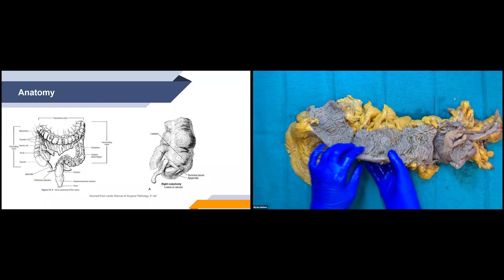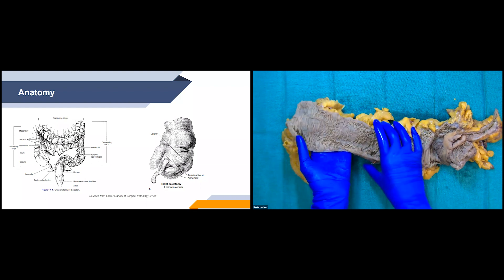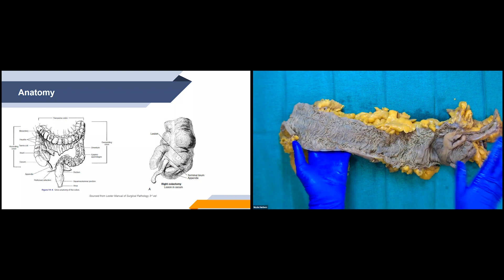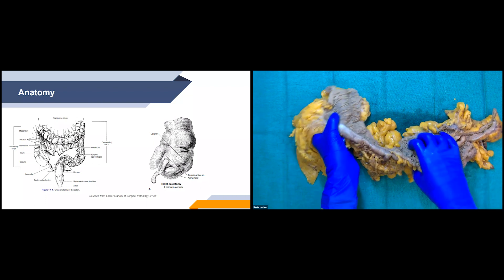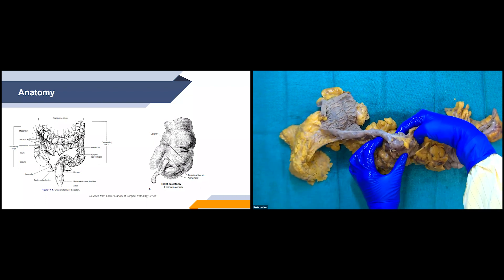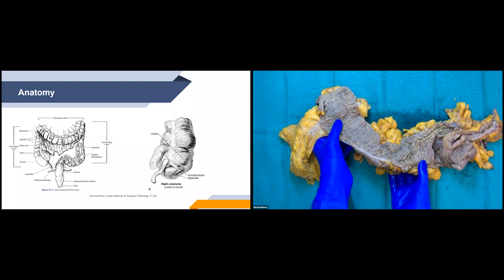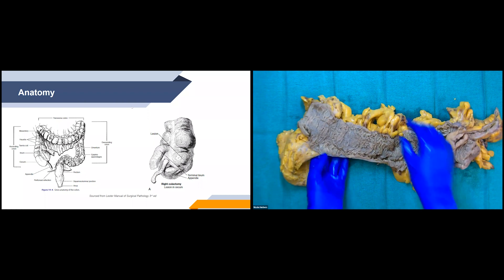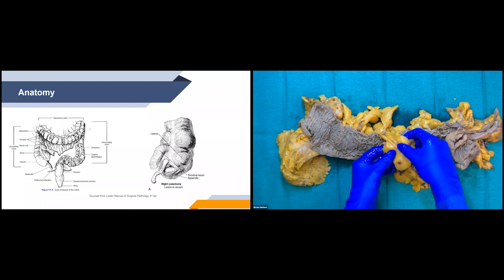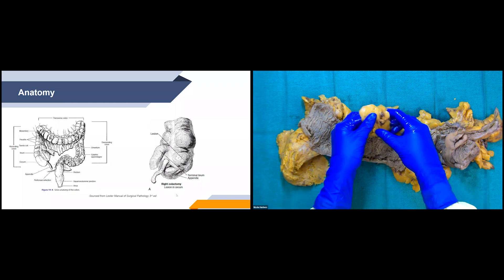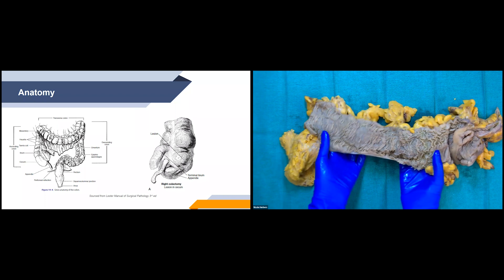It also has haustra — these kind of like pouches. It's a little hard to tell with this one because it's been formalin fixed and kind of flattened, but there are little pouches that have formed. You can see a little bit here. And then as well, epiploic appendages, which are these fatty appendages that are covered in peritoneum. And those are all just for the large bowel.